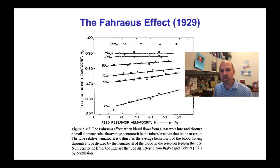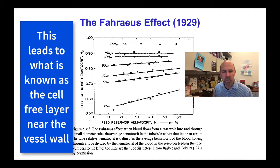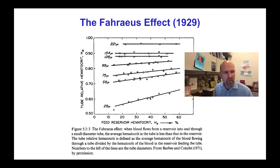The answer is that the red blood cells tend to flow down the middle of the tube. Once the tubes get smaller, the average concentration of red blood cells must be higher near the middle of the tube than the wall, because the red blood cells can't cross the wall. Therefore their average concentration is higher near the middle of the flow where the flow velocity is higher, and the average flow velocity of the red blood cell is actually higher than the average plasma flow velocity.